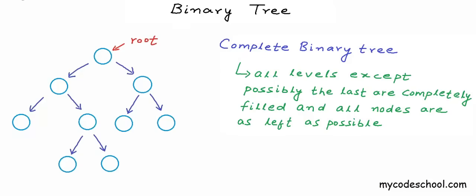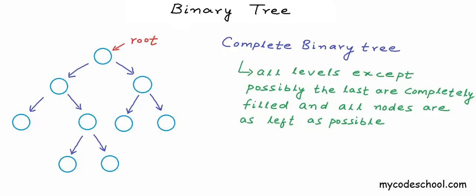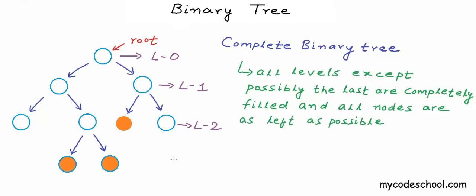A binary tree is called a complete binary tree if all levels except possibly the last level are completely filled, and all nodes are as far left as possible. Nodes at the same depth are called nodes at the same level. The root node is at level 0, and depth of a node is the length of the path from root to that node. These two nodes are at level 1, these four at level 2, and these two at level 3.